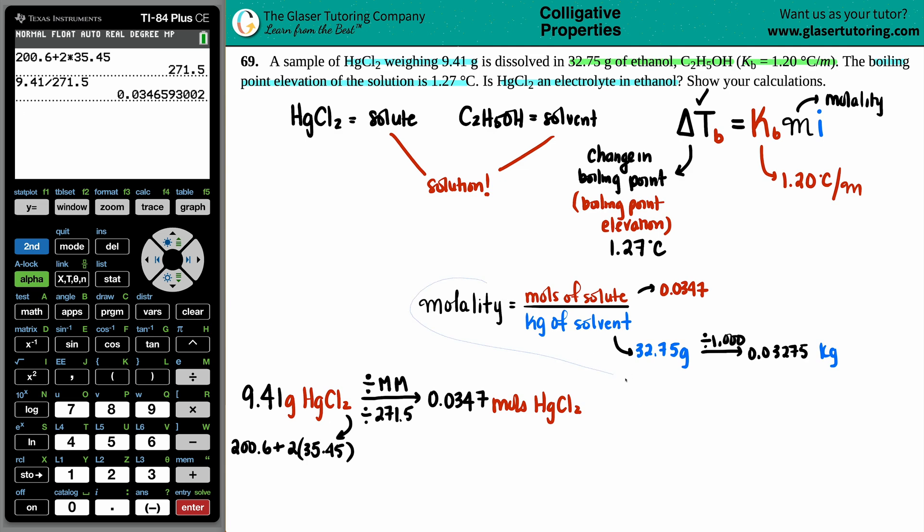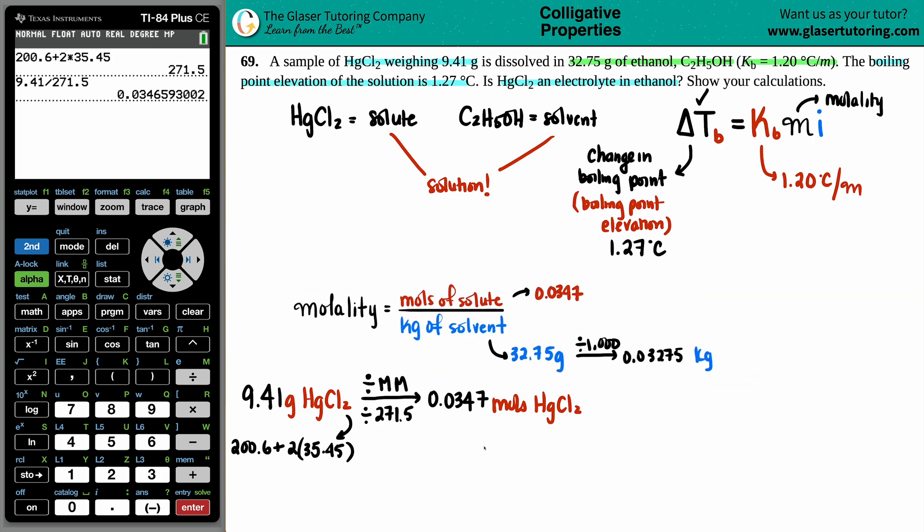And now, let's find out the molality. Molality equals 0.0347 divided by 0.03275. Let's find out what that molality equals. I'm going to take this full number here and divide it by 0.03275. So, we get a molality of 1.058. And remember, we did all that because we could find the molality. So, this is now 1.058.